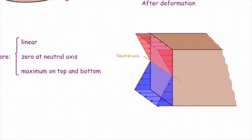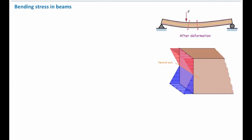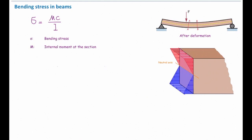Now we are ready to show the equation for calculating stress. Based on the radius of curvature and some assumptions — the proof of which you can find in the textbook — the equation for calculating bending stress is sigma = Mc over I. Sigma is bending stress, which is a normal stress because it acts perpendicular to the cut section. M is the internal moment in the cut section, which we get from the moment diagram. I is the moment of inertia, discussed in the previous lecture.